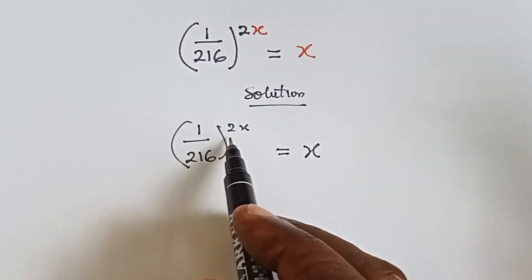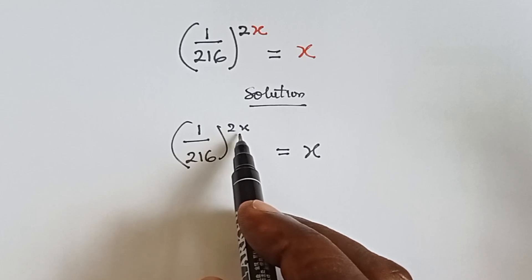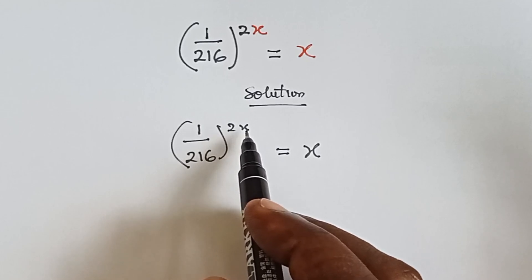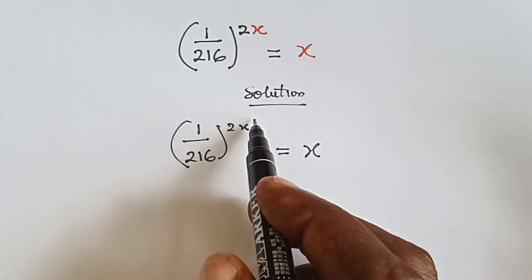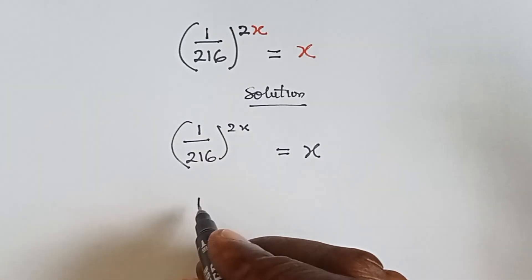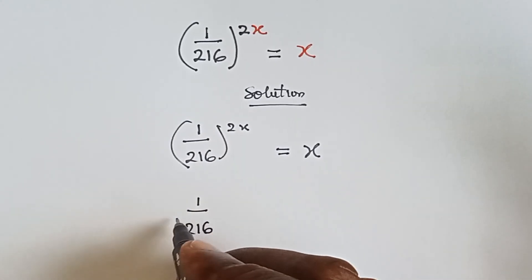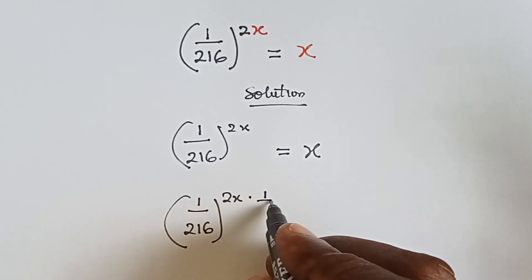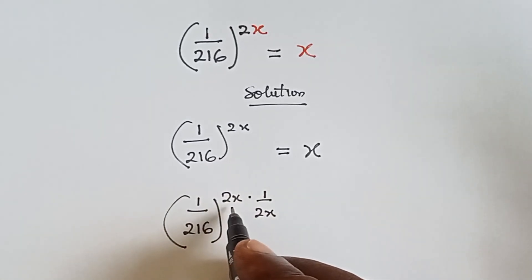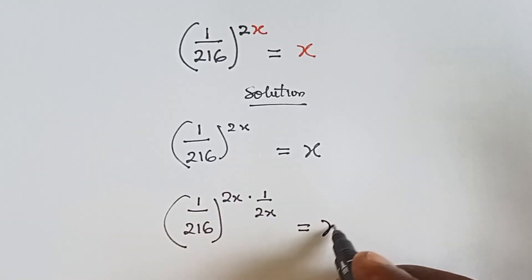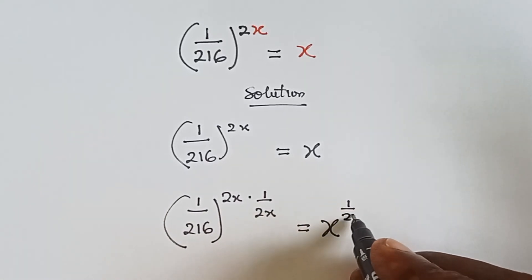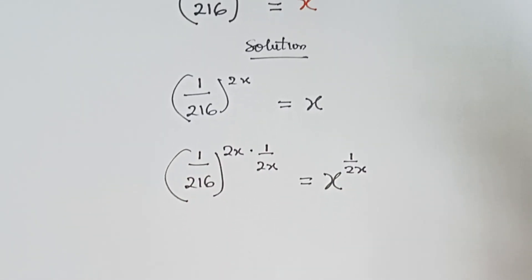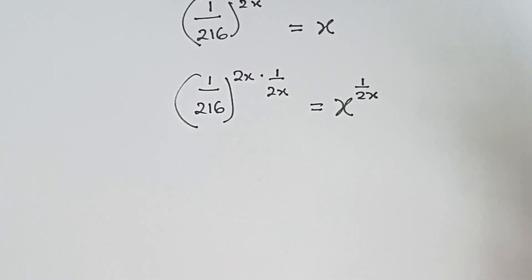One way to eliminate this 2x is to multiply it with its reciprocal, which is 1 over 2x. So it means that we should apply 1 over 2x to both sides. We have 2x multiplied by 1 over 2x — which is the reciprocal — and we also multiply the right side by 1 over 2x. Whatever we do to one side, we do to the other side as well. Now let's cancel out the 2x.